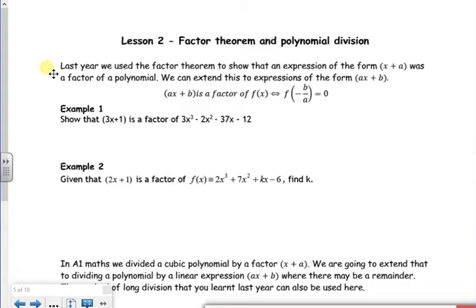Remember last year you could see if it was a factor if when you put a value in you got zero out. Well that's the same here now because we had like x plus fours and things like that so you put in minus four. But now if it was 3x plus 2 I need to be able to rearrange it. So what I've done, I've put that equal to zero and then I've just took the b over and divided by a. So that's where that comes from.